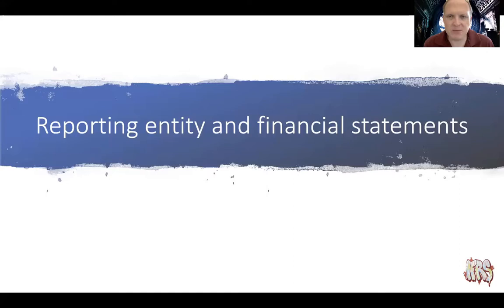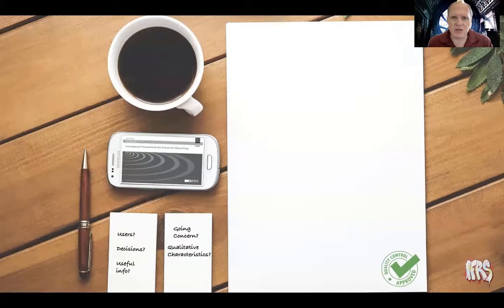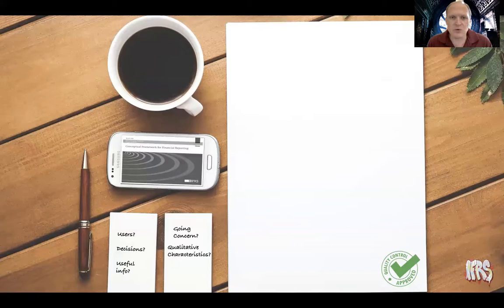Hello, Team 201. We're busy looking at the conceptual framework and our next stop on this journey is having a look at the reporting entity and financial statements. So far, we've looked at what the framework is driving us to do, and that's providing useful information to users of financial information presented in financial statements. And to make that information useful, we want to make sure that that information has got a high quality, which the qualitative characteristics we've discussed will hopefully help you in achieving.